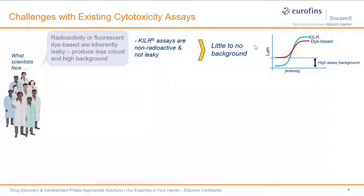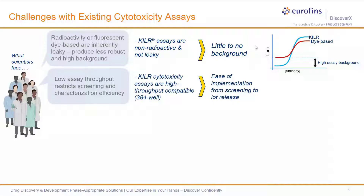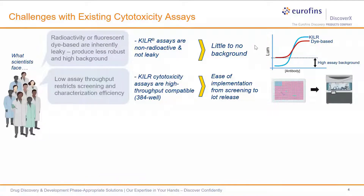Another challenge with many of these assays is that they are somewhat low throughput, restricting the ability to screen in a high-throughput format, which reduces their use for antibody characterization at earlier stages. The advantage of the KILR cytotoxicity platform is that it is compatible with both 96- and 384-well formats, easing implementation for screening and continuing use in late-stage lot release if appropriate.